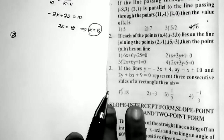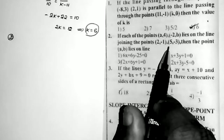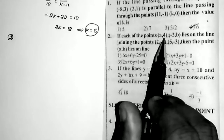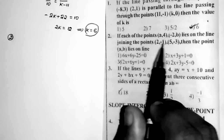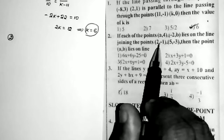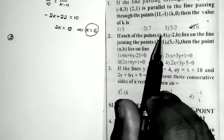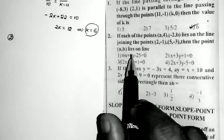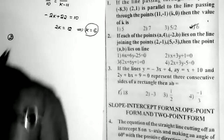Sum number 2: if each of the points (a, 4) and (−2, b) lies on the line joining the points (2, −1) and (5, −3), then the point (a, b) lies on which line? Given that points (a, 4) and (−2, b) lie on the line joining these two points. We first find the equation of the line passing through (2, −1) and (5, −3), then substitute the two points to find a and b.